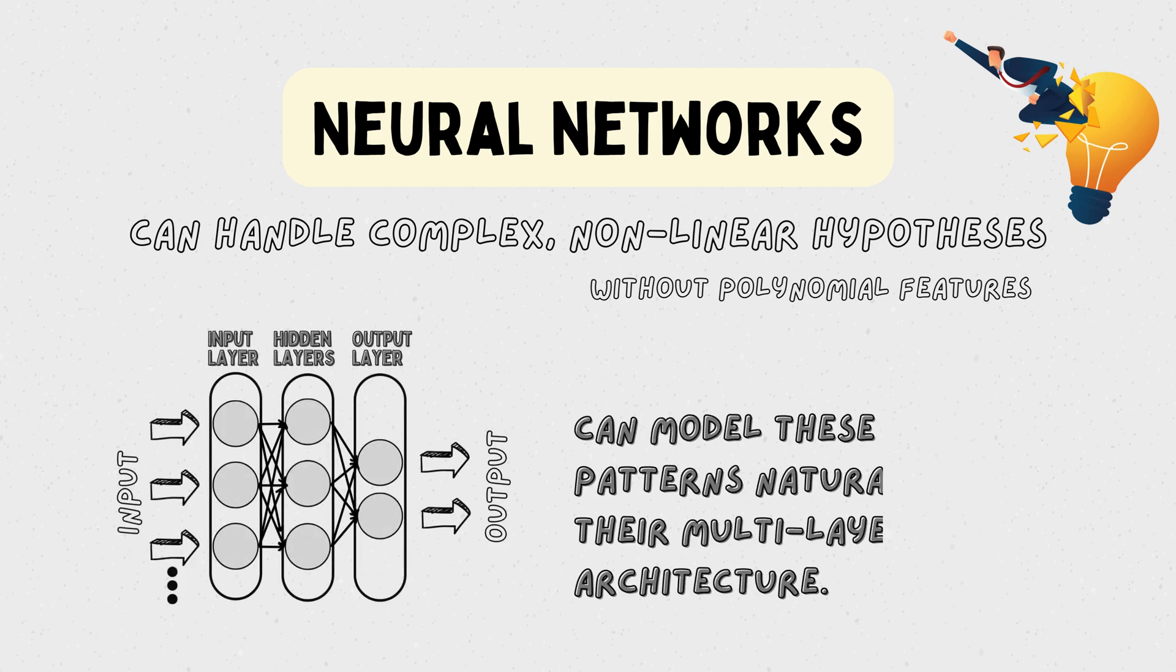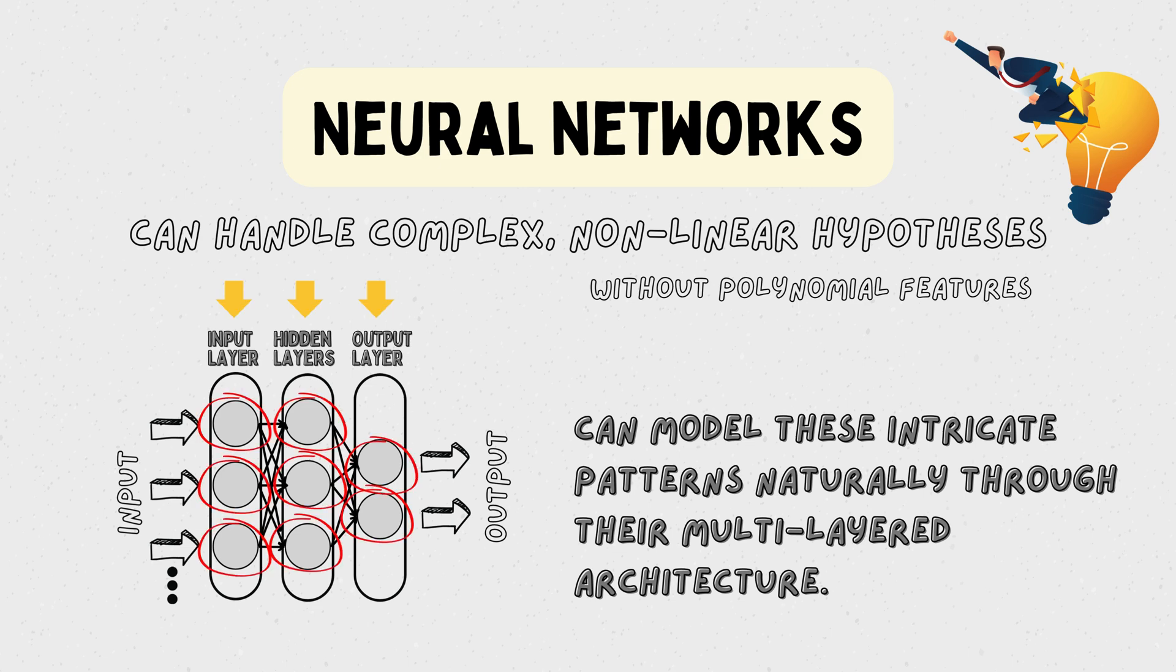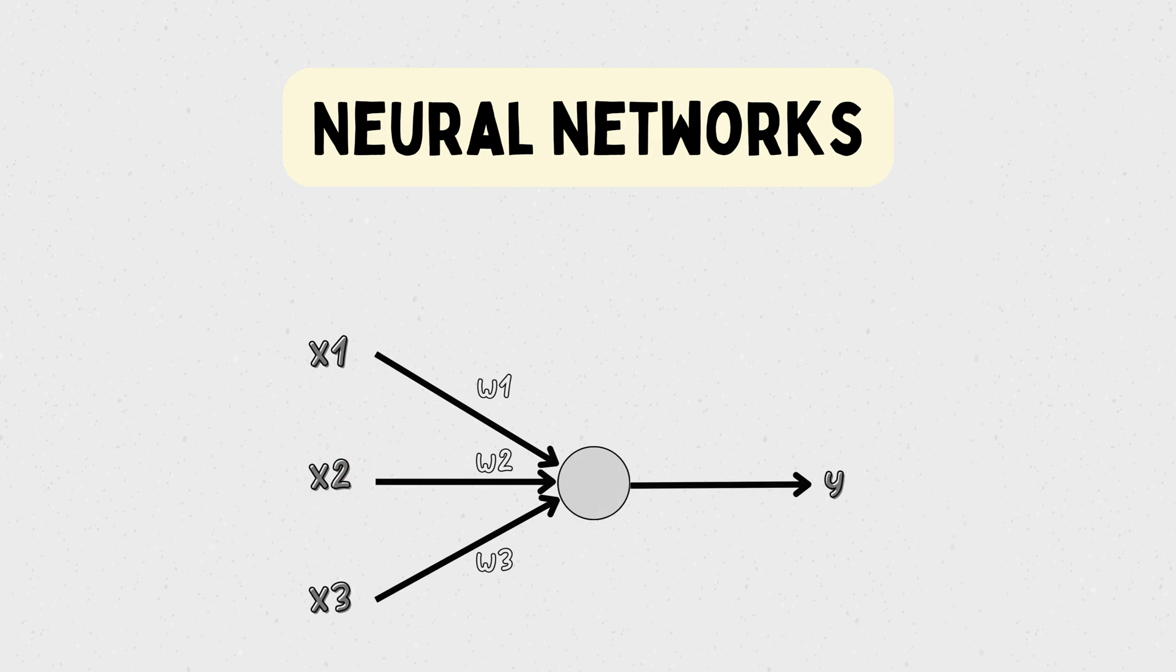Neural networks consist of multiple layers of interconnected nodes or neurons. Each connection has a weight, and each neuron applies an activation function to its input.